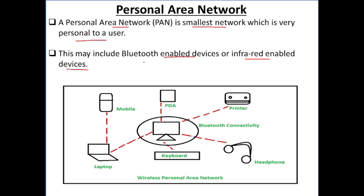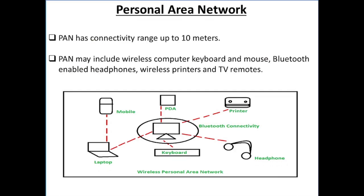You can transfer data to your mobile and laptop by using Bluetooth or by using a hotspot — this is Personal Area Network. PAN has a connectivity range up to 10 meters.